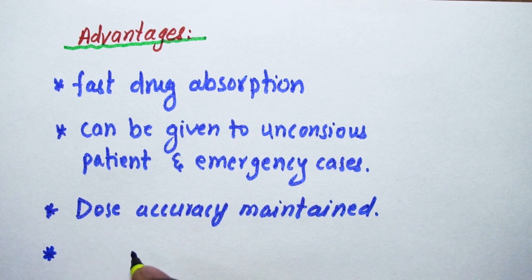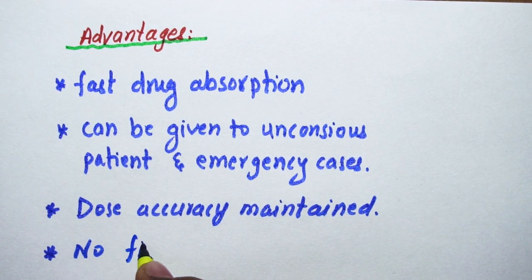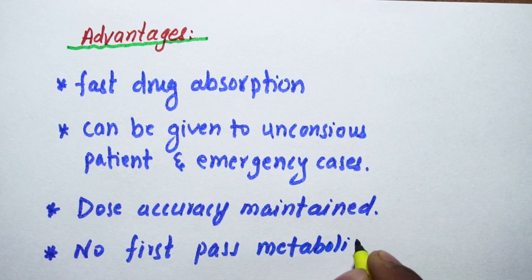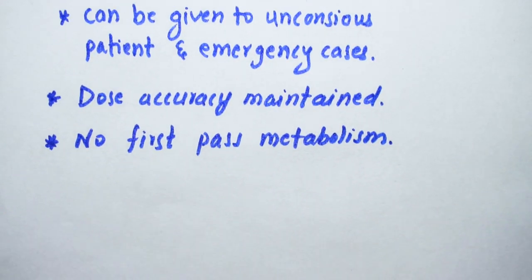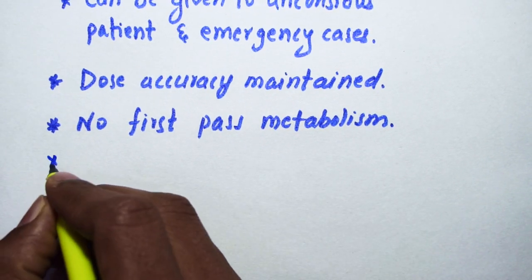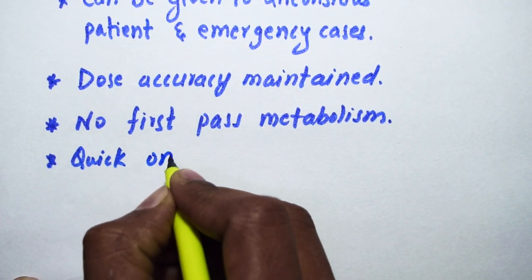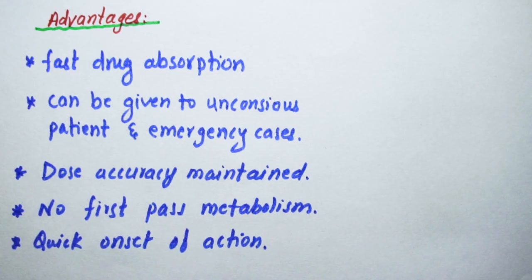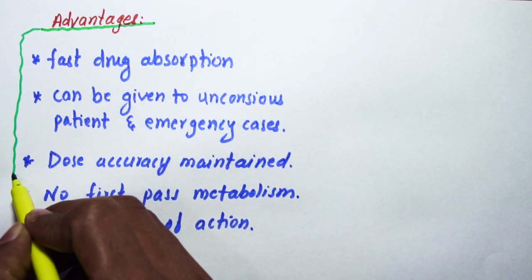There is no first pass metabolism as the drug is administered directly to the systemic circulation. It has quick onset of action, meaning it will start working as soon as it is delivered to blood circulation.